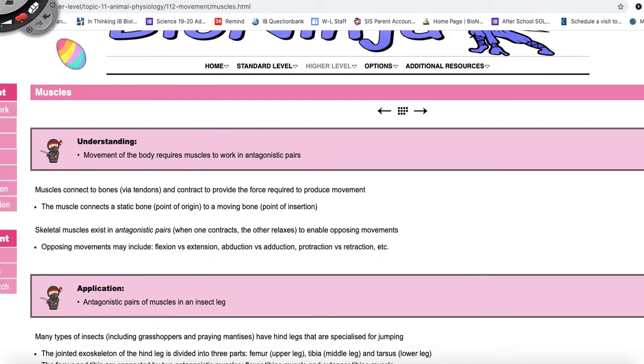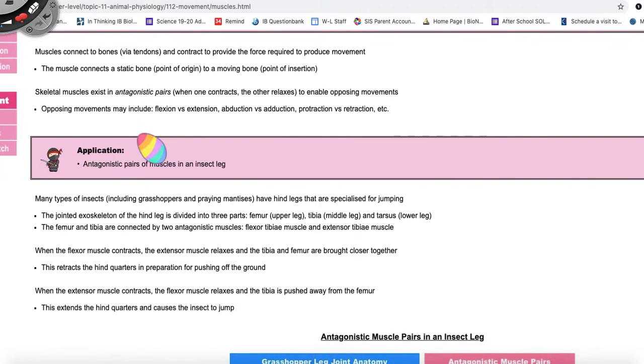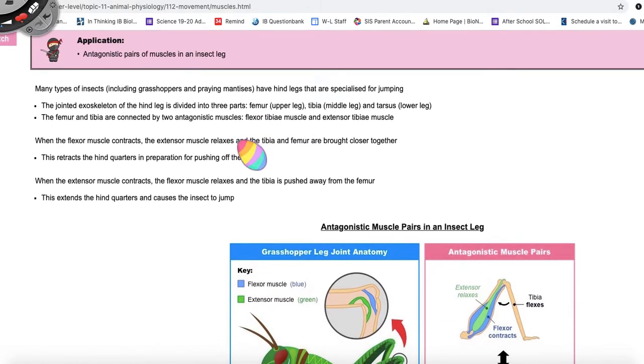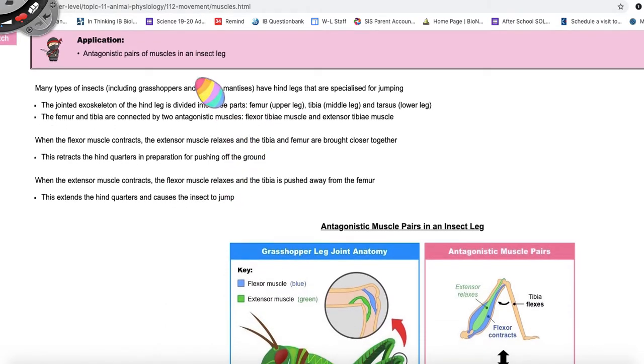So the application for this is the antagonistic muscles in the insect leg. So they want you to pay attention to the insect leg and how they work. So you can look at a grasshopper, you can look at a praying mantis, and you can look at their hind legs, which are specialized for jumping. And you can see how they have these antagonistic pairs of muscles.